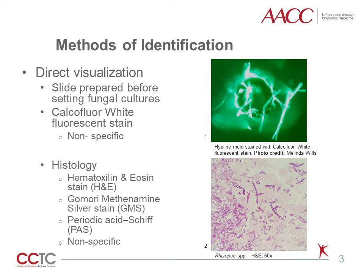Direct visualization by histology examination can be very useful for detection of mold in tissue, especially if no sample was sent to the microbiology laboratory. Hematoxylin and eosin stain is the primary stain used, as seen in image two, but periodic acid-Schiff (PAS) and Gomori methenamine silver stain (GMS) are commonly used to aid in visualizing fungal structures better. Histology slides are relatively slower to prepare, lack specificity, and cultures or molecular identification from the paraffin block are still needed for final identification.